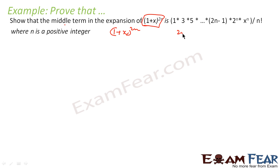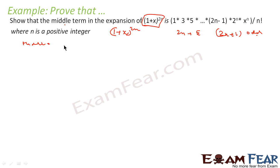Since 2n is an even number, the total number of terms in the expansion is 2n + 1, which is odd. So the middle term will be at position (2n / 2) + 1, that is n + 1. This is the middle term.